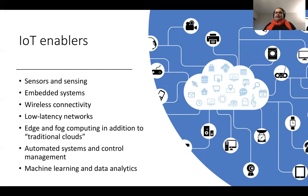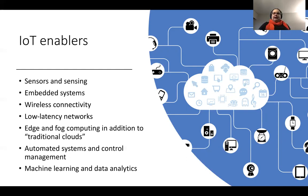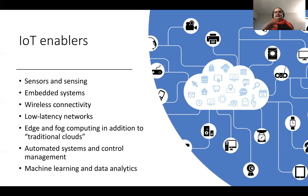Edge and fog computing means that instead of sending everything to the cloud, which can be quite far away, we actually perform local computing at the edge of the network — in local devices inside your smart home, local servers, or dedicated edge servers in the network infrastructure. We need to think about where we perform the computation, when we perform it, and how it's going to happen in the whole big picture.